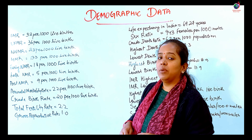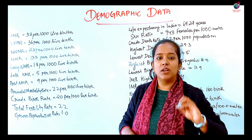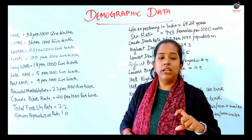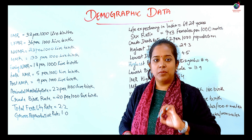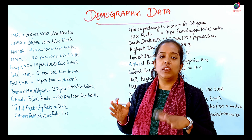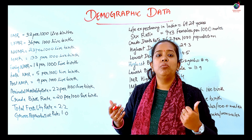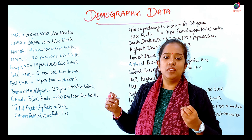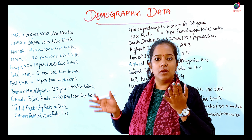The first one is IMR, that is Infant Mortality Rate, which is 32 per 1,000 live births. On average, when there are 1,000 live births, we calculate the IMR. So here we are comparing the rates to 1,000 live births.